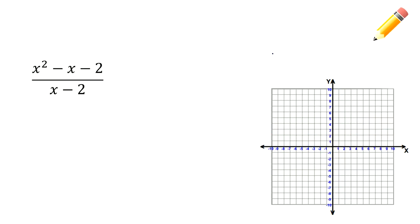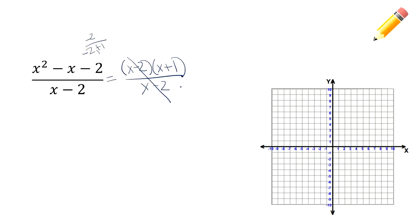Looks like I've got some factoring to do on the top. My x squared minus x minus 2 factors as x minus 2 times x plus 1, because ac equals negative 2 giving factors 2 and negative 1. Something's going to cancel out. Remember, when something cancels, that leaves a hole. So I'm going to have a hole where x minus 2 cancels — meaning x equals 2 is a hole in my graph.